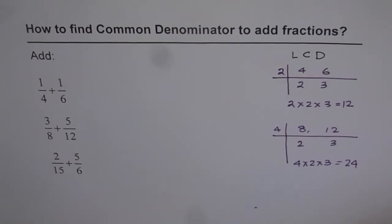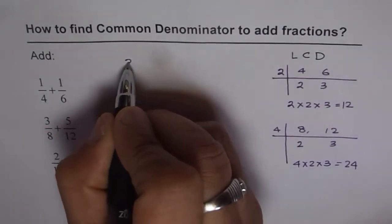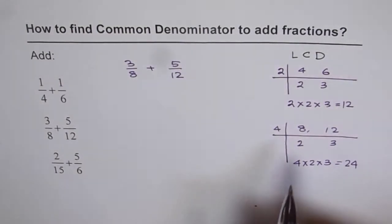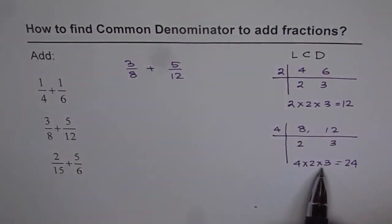Practice that. Now once we have found least common denominator then how to add the fractions. I will show you how to add 3 over 8 plus 5 over 12. Let's do that one. 3 over 8 plus 5 over 12.